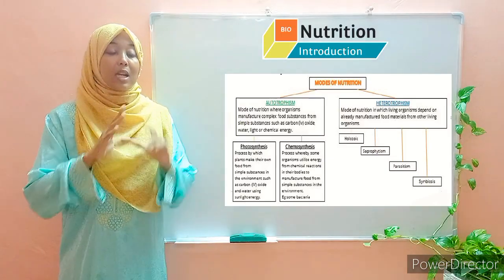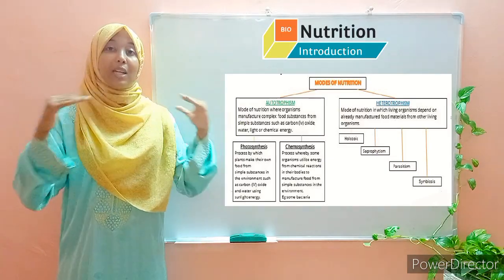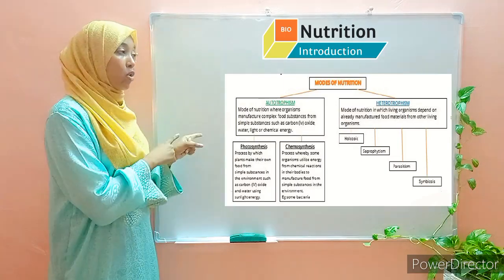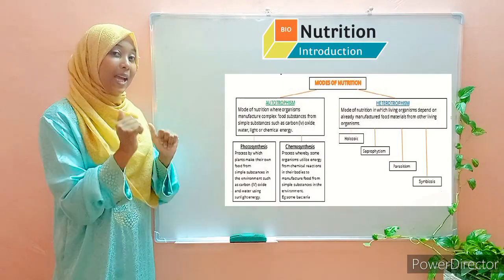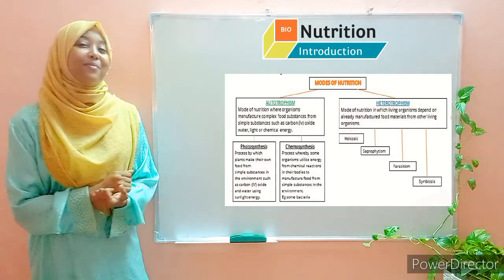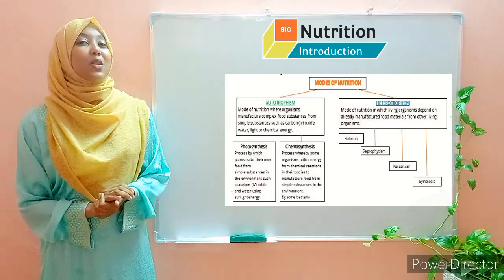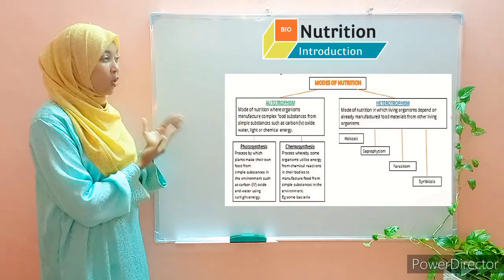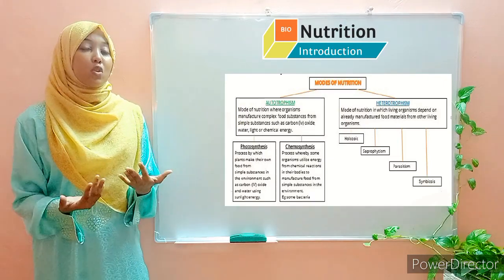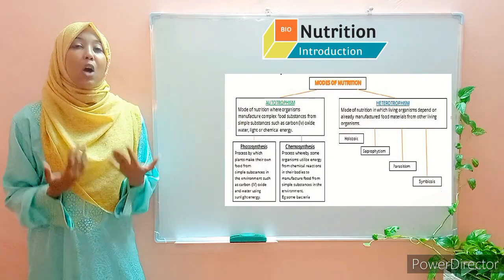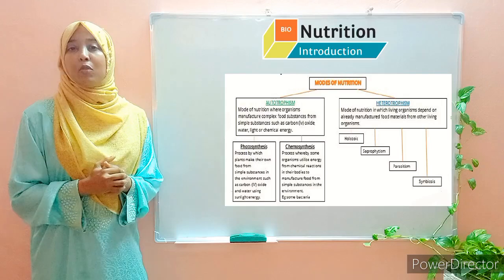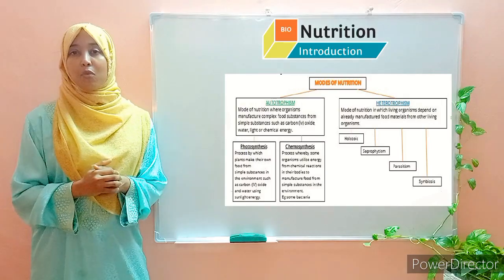Modes of nutrition are broadly divided into two: we have autotrophism and heterotrophism. In autotrophism, organisms are capable of manufacturing their own food.